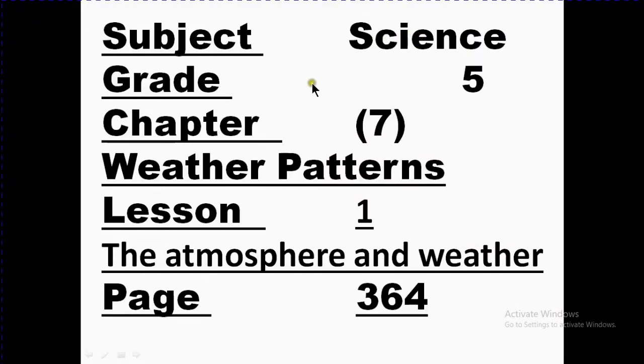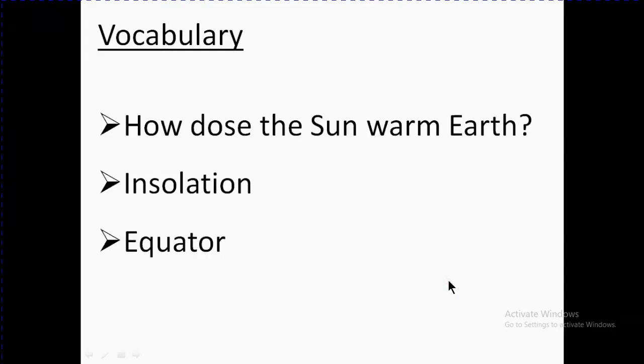Subject: Science, Grade 5, Chapter number 7: Weather Patterns, Lesson number 1: The Atmosphere and Weather, page number 364. Now this is a new lesson that we start: How does the Sun warm Earth by insolation and equator?